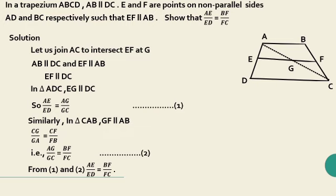So AG by GC in these two equations are equal. That's why AE by ED is equal to BF by FC.